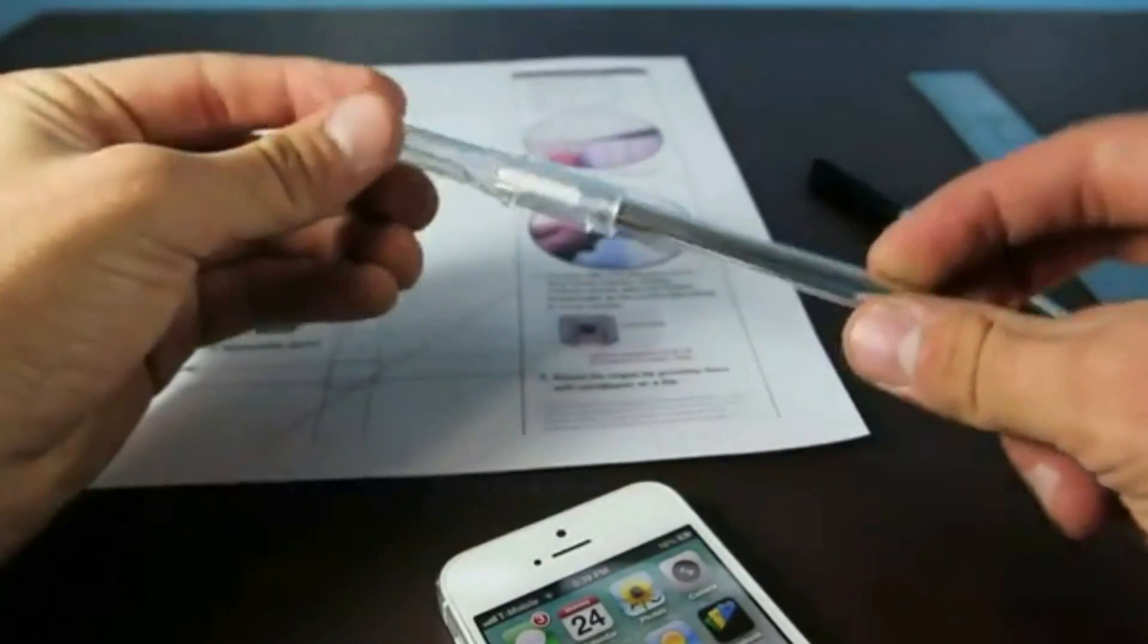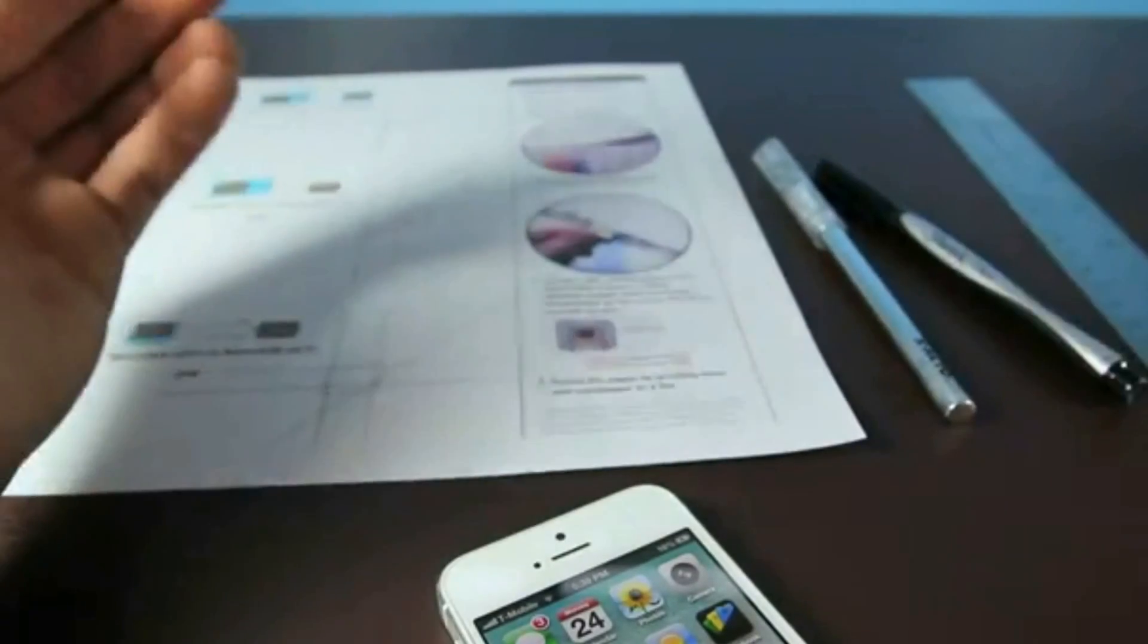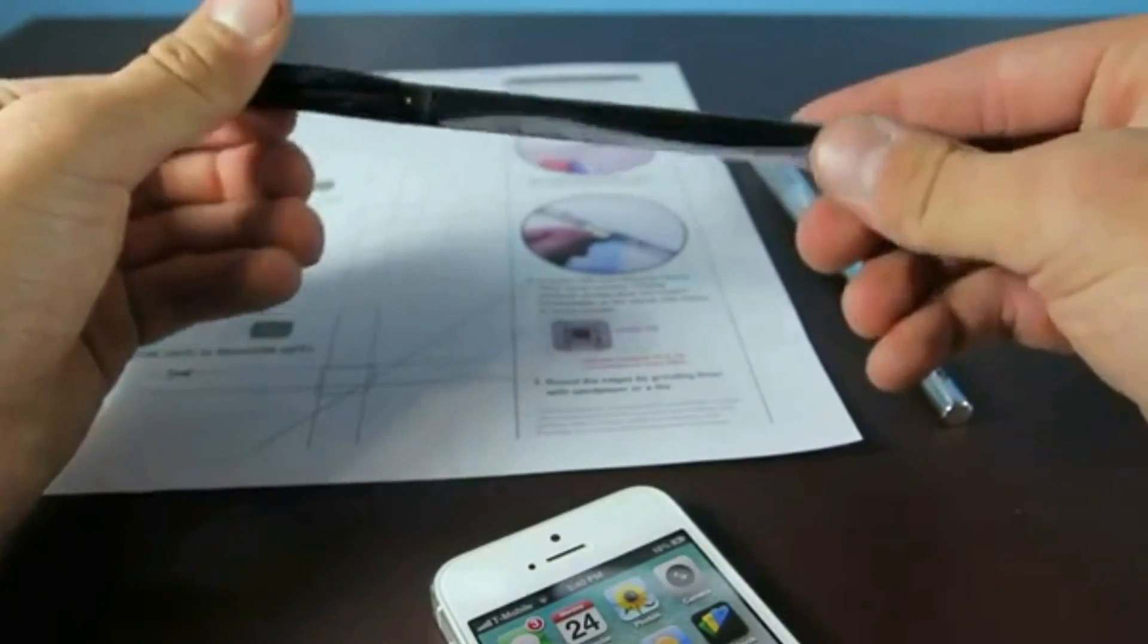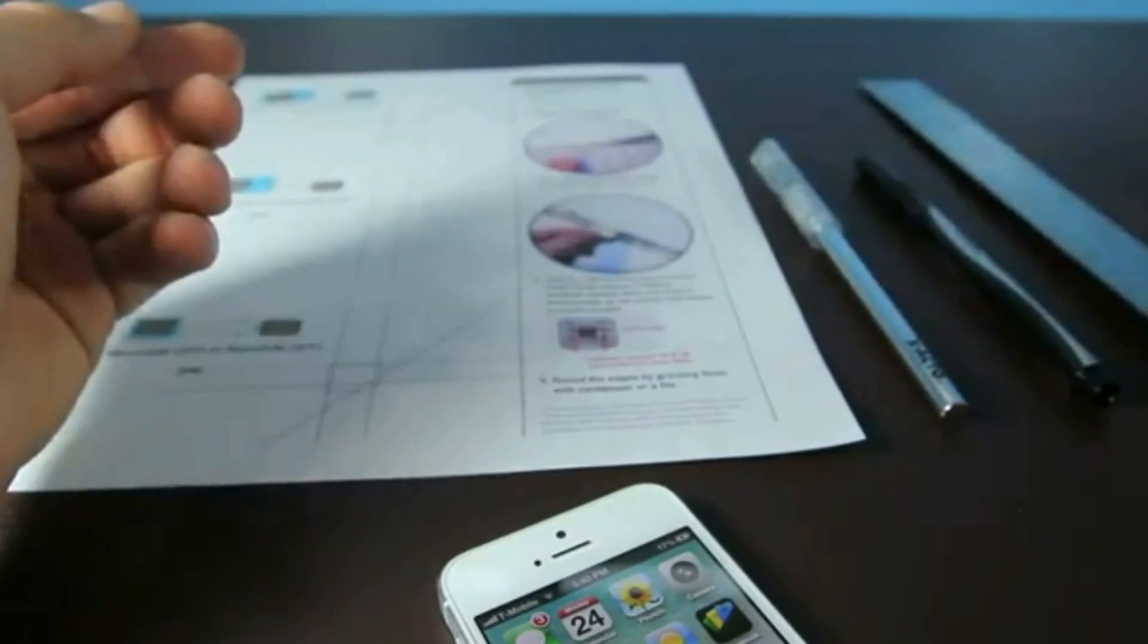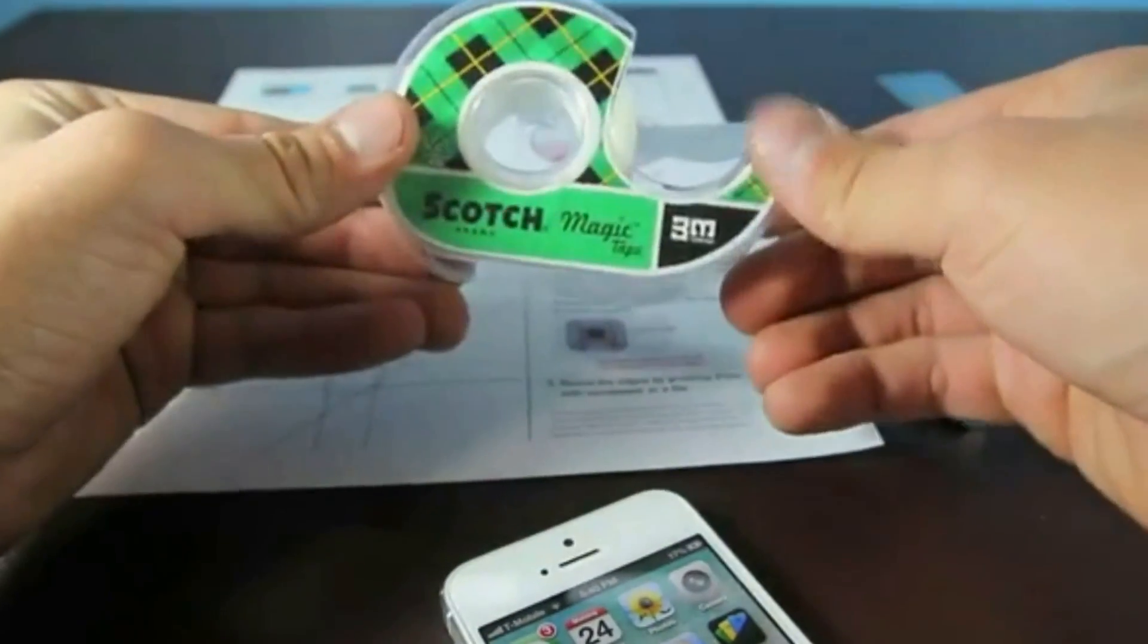You'll need a blade of some sort to cut—I'm using an Exacto blade. You can use scissors or a knife. Here's a Sharpie that I'm going to be using, either a Sharpie or pen of some sort. And you'll need a ruler so we can draw the lines and tape to secure the SIM card.